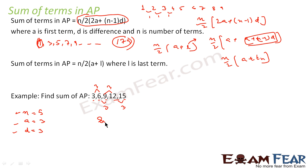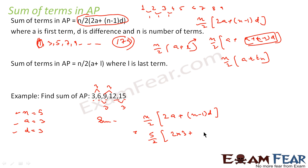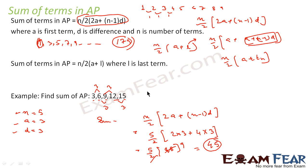We know that sum = N/2 × (2A + (N−1) × D). Substituting: 5/2 × (2×3 + (5−1)×3) = 5/2 × (6 + 12) = 5/2 × 18 = 5 × 9 = 45. So the sum of terms is 45. Cross-verification: 3+6 = 9, 9+9 = 18, 18+12 = 30, 30+15 = 45. The manual calculation and the formula both give the same result, confirming the formula is correct.